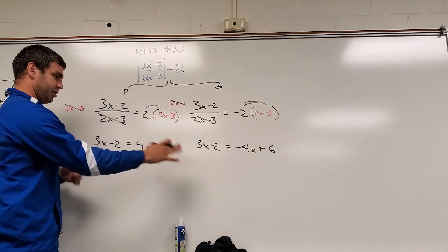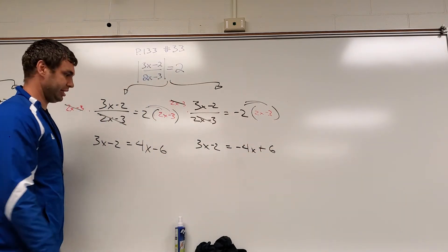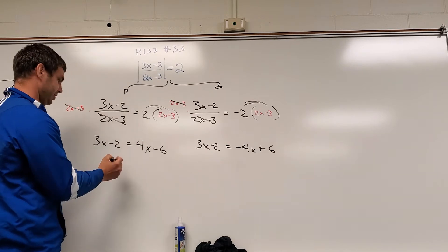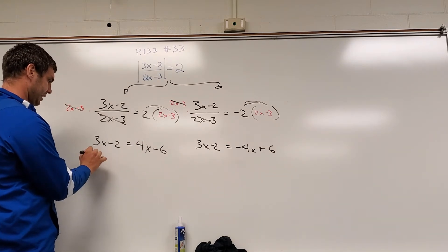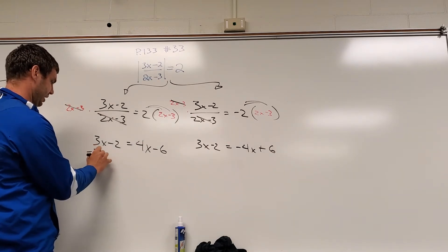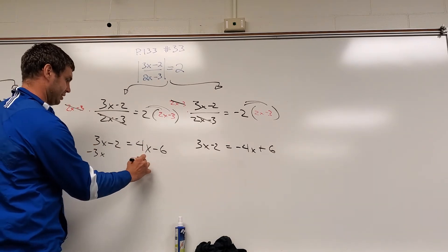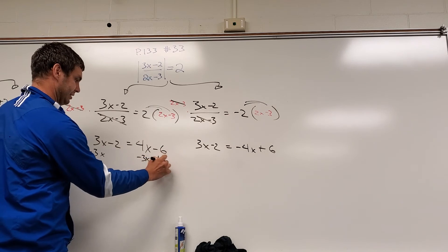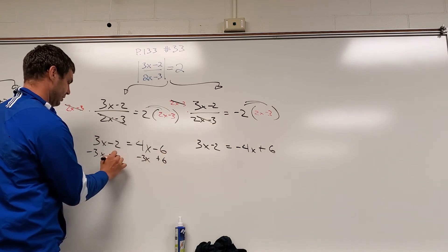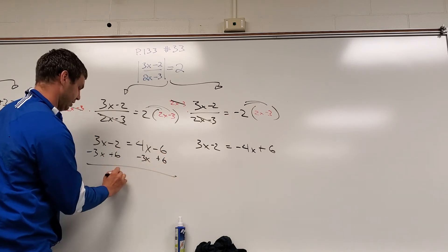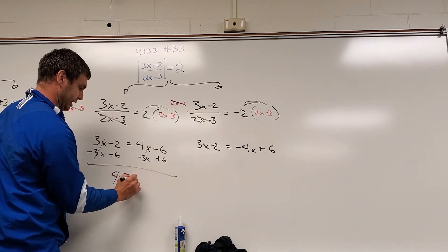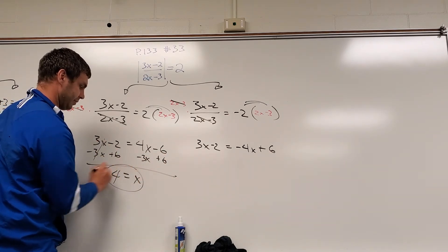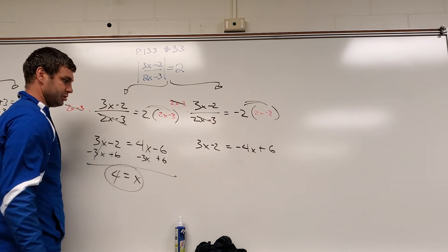Let me solve both separately. For the first equation, subtracting 3x on both sides and adding 6 leaves 4 equals x. So x equals 4 is one solution.